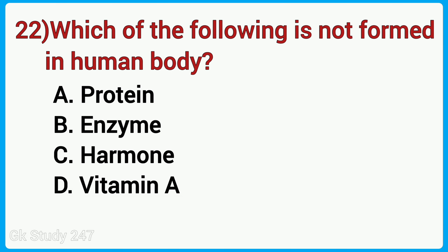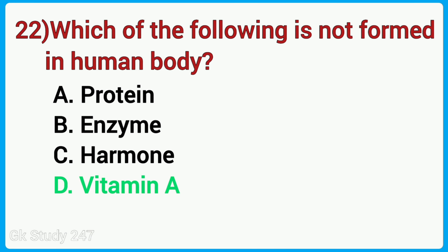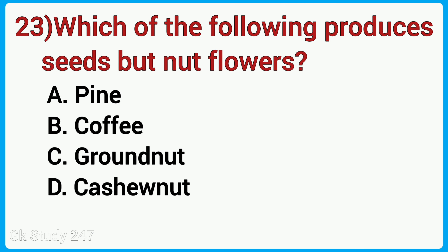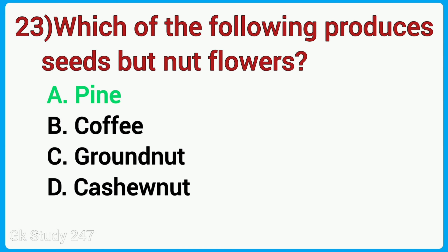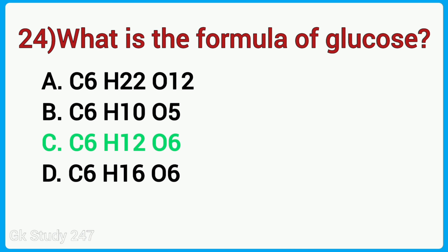Which of the following is not formed in the human body? Answer is vitamin A. Which of the following produces seeds but not flowers? Answer is pine. What is the formula of glucose? Answer is C6H12O6.